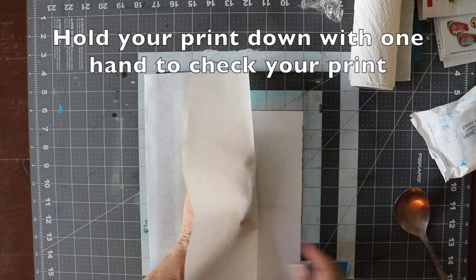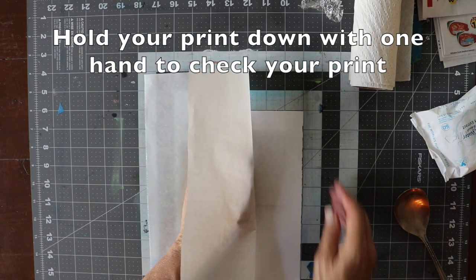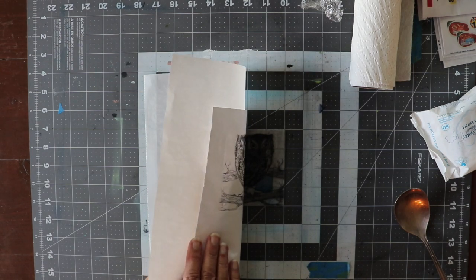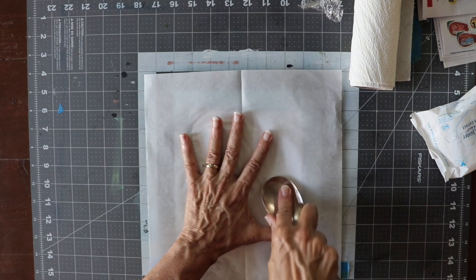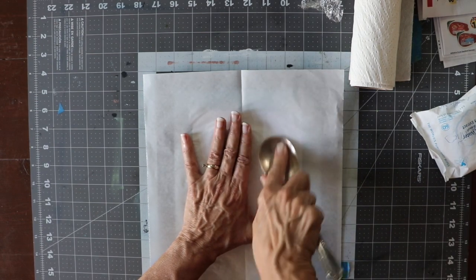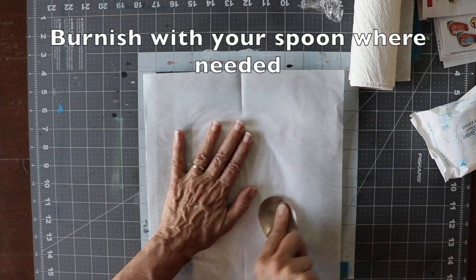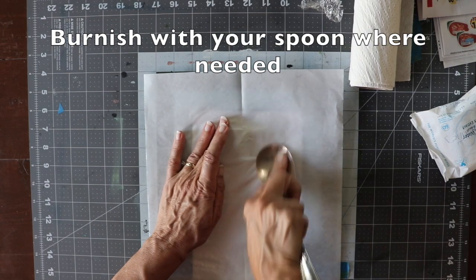Use one hand to hold your print down to check your progress. After checking your print, apply heavy pressure or burnish the areas that haven't fully transferred.